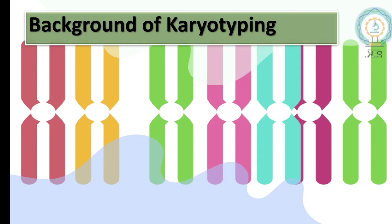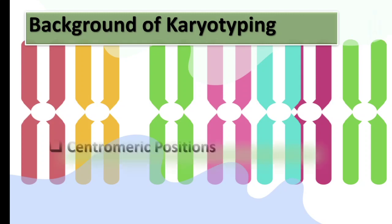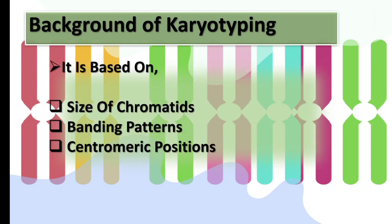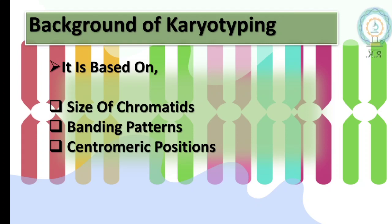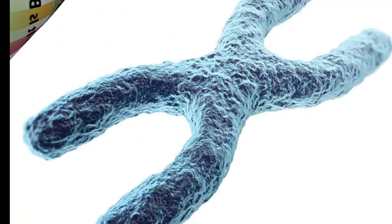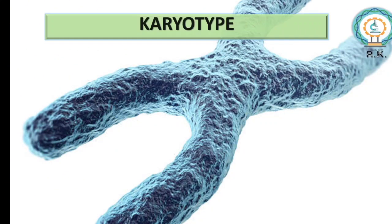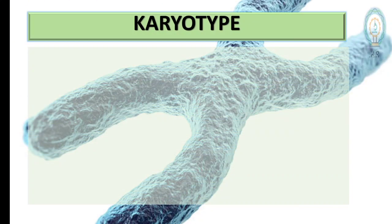The background of karyotyping is based on three main points: size of chromatids, banding patterns, and centromeric positions — basically the position of the centromere.